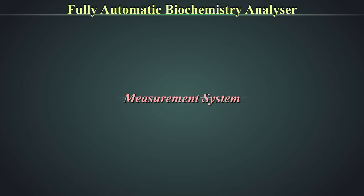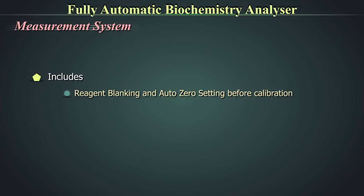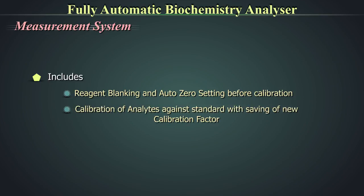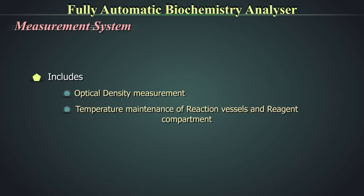The measurement system includes reagent blanking and auto-zero setting before calibration, calibration of analytes against a standard with saving of new calibration factors, optical density measurement, and temperature maintenance of reaction vessels and reagent compartment.